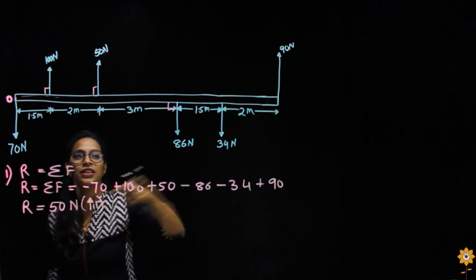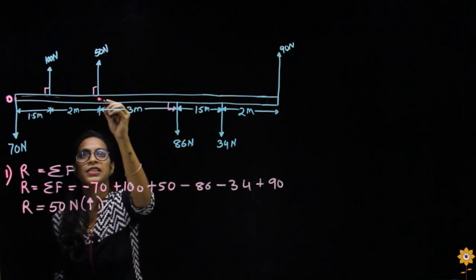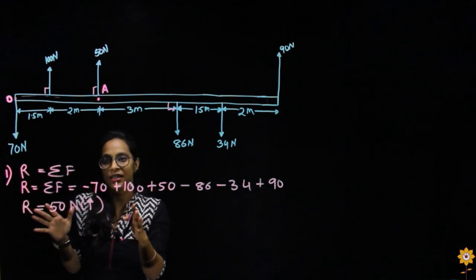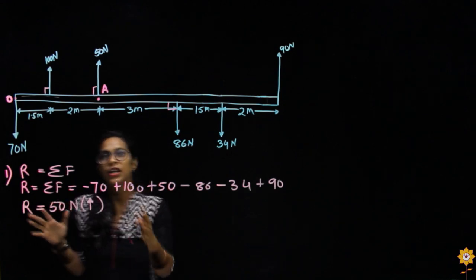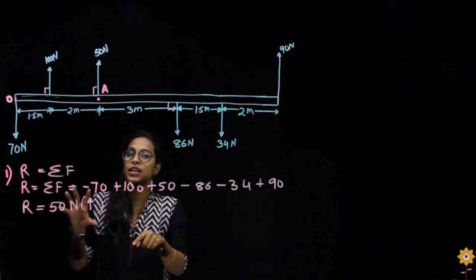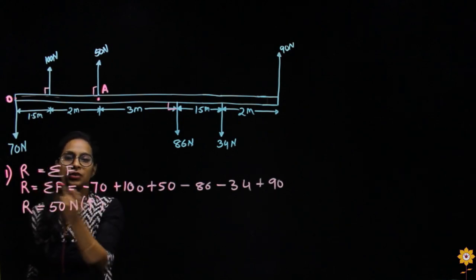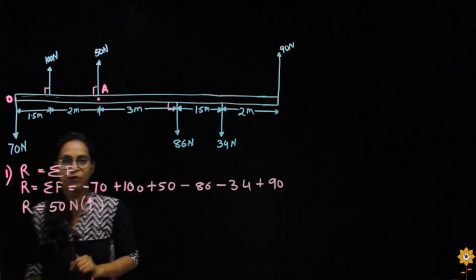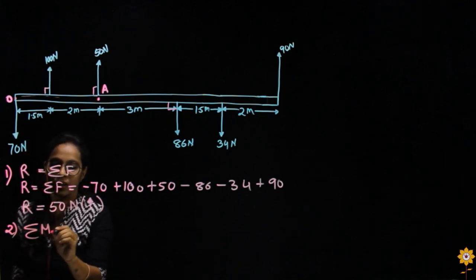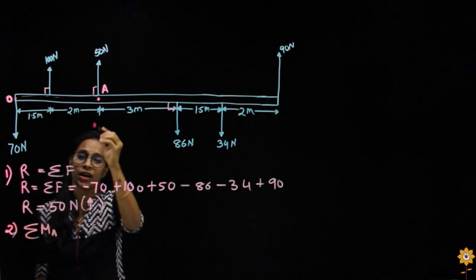Now if the question asks to replace the whole system by a force and a couple at point A, we proceed differently. The first step remains the same — finding the resultant, which stays 50 Newton. The second step is finding the moment at point A, because we have to replace our system by a couple at point A, and a couple is also a moment.